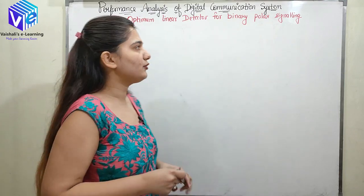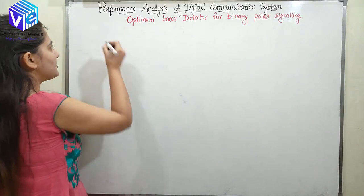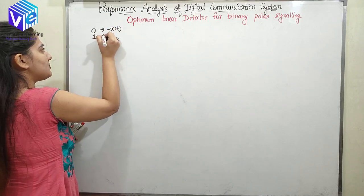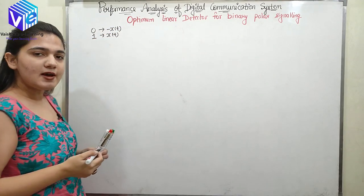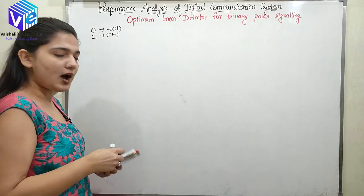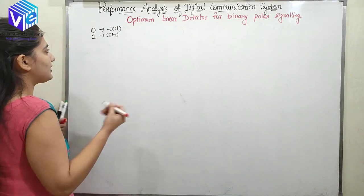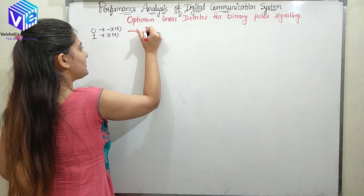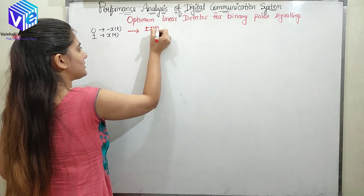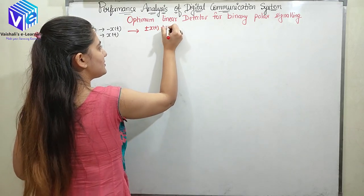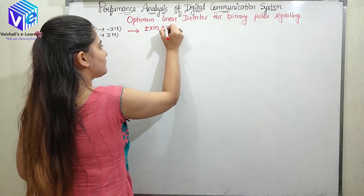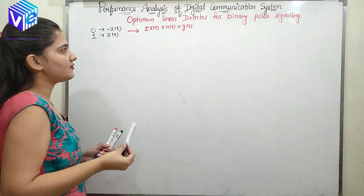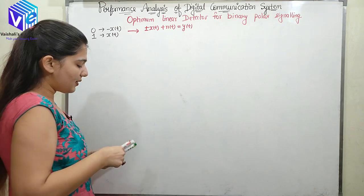In binary polar signaling, 0 is represented by minus x(t) and 1 is represented by x(t). So this is binary polar signaling, represented as plus or minus x(t). When I transmit it, there would be noise in the channel, so this noise would be added to the signal, and what is received by the receiver is plus or minus x(t) plus n(t).